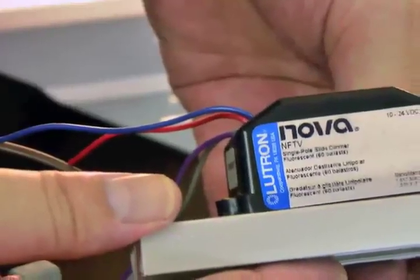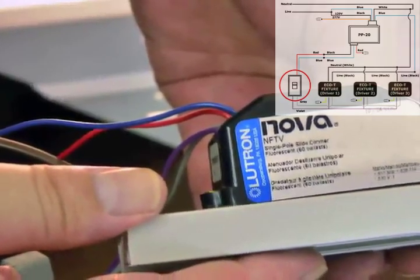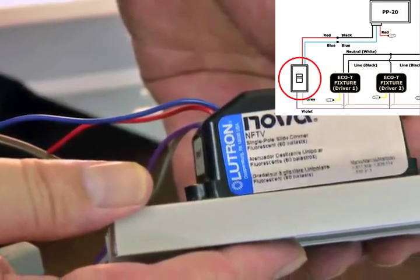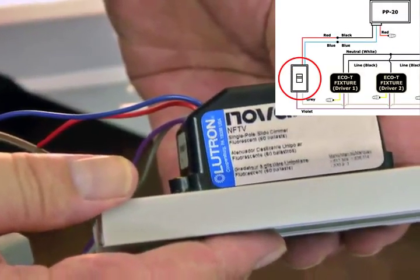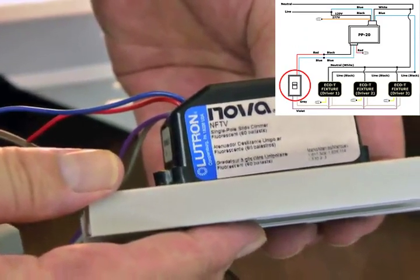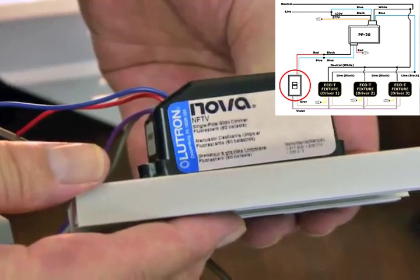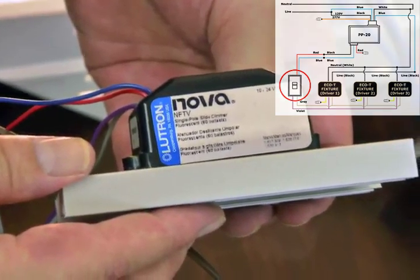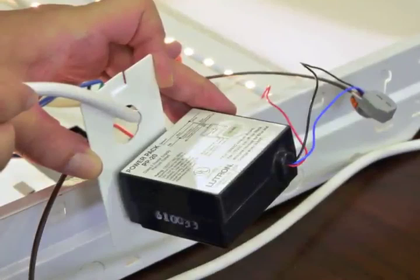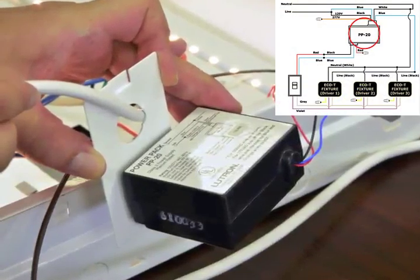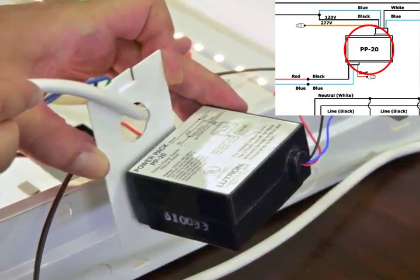Along with the Eco-T, we are using the Lutron NF-TV-WH 0-10 volt wall dimmer, and because we are going to have more than one Eco-T lay-in troffer on a single switch, we will need to also install the Lutron PP-20 relay pack in the first fixture closest to where the wall switch will be mounted.